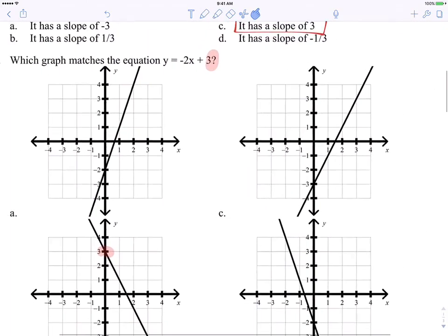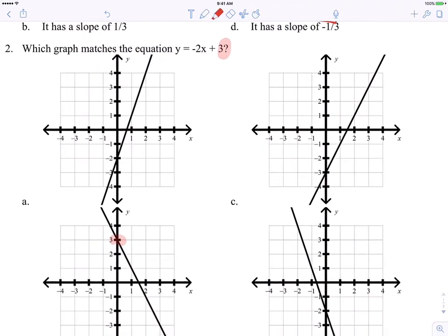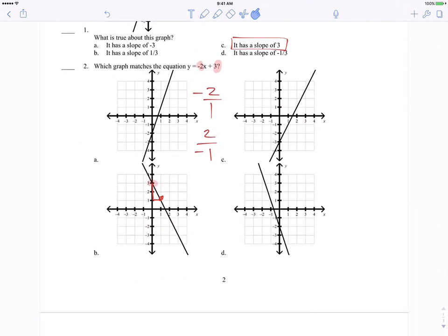Now, I hope that makes sense. Taking a look at another question. Which graph matches the equation y equals negative 2x plus 3? This question is pretty darn straightforward. We've learned this year that 3 is the y-intercept, right? Because this is in slope-intercept form. And so let's look for that 3 on the y-axis.